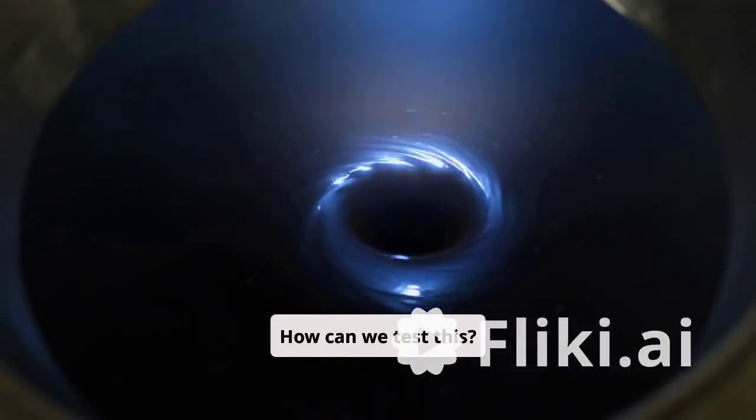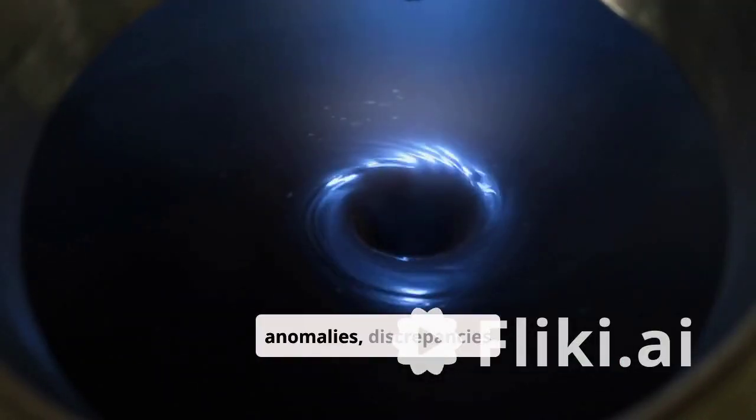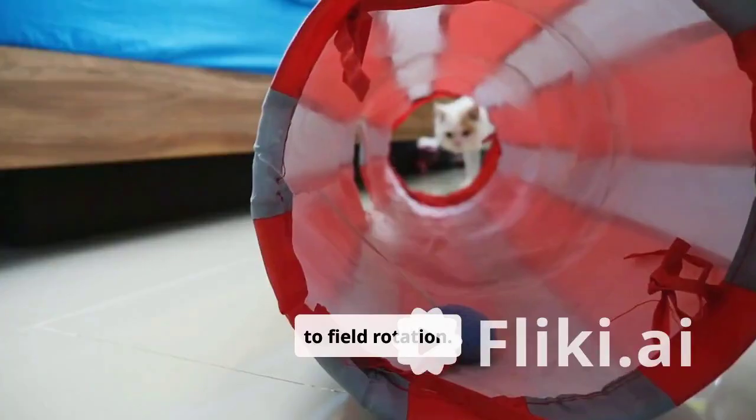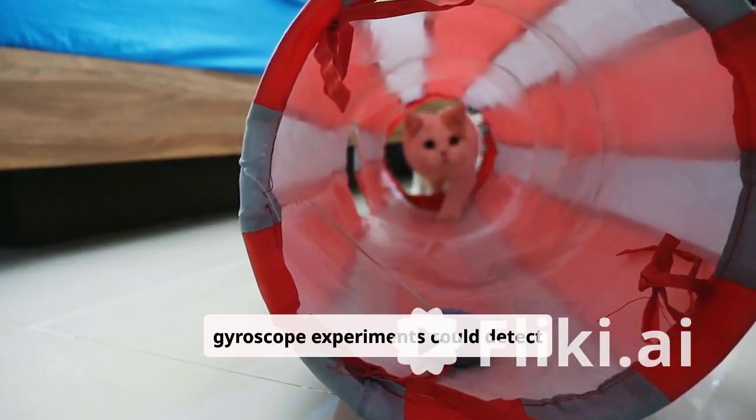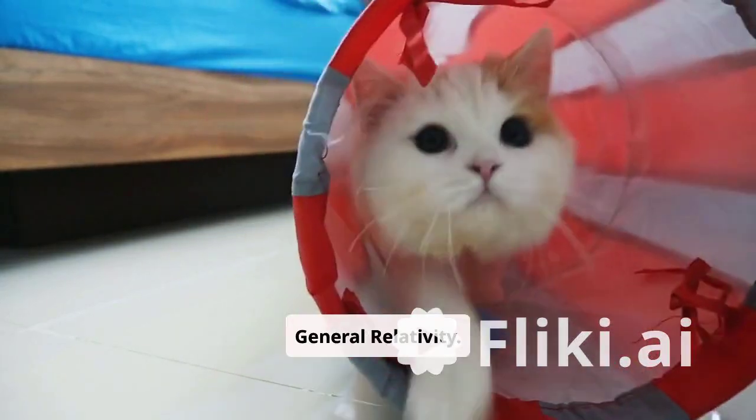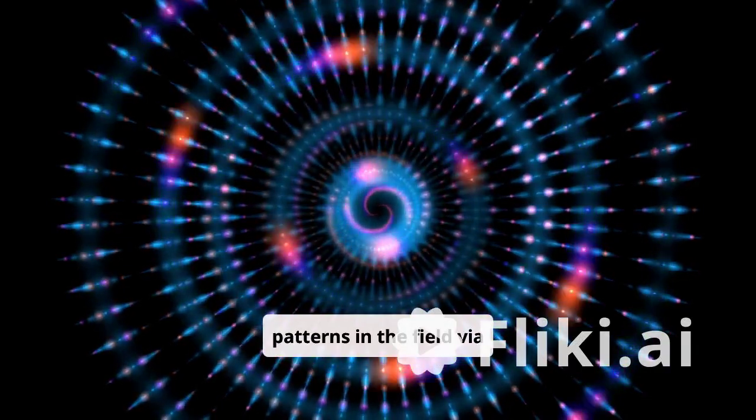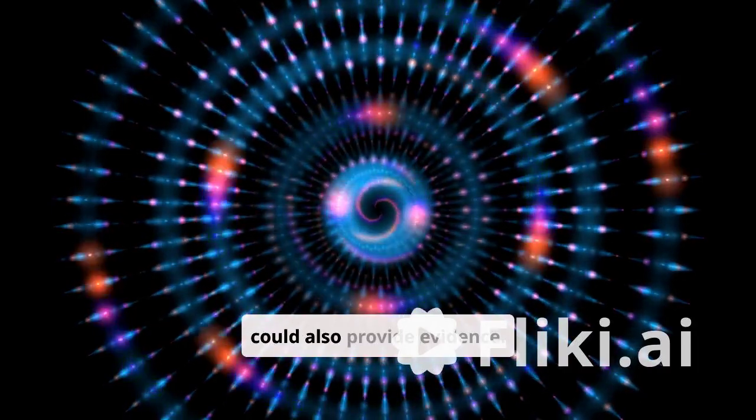How can we test this? Look for lensing anomalies, discrepancies in gravitational lensing due to field rotation. Improved gyroscope experiments could detect rotational fields beyond general relativity. Detecting large-scale patterns in the field via gravitational wave polarizations could also provide evidence.